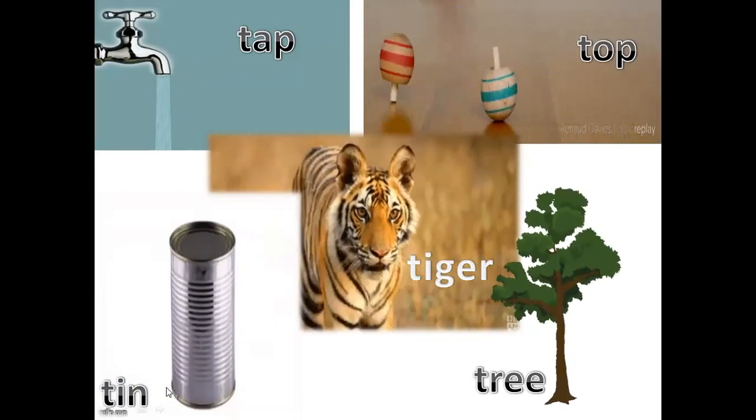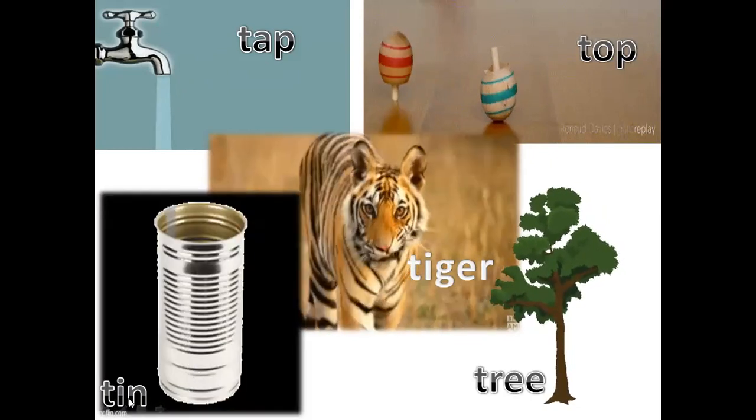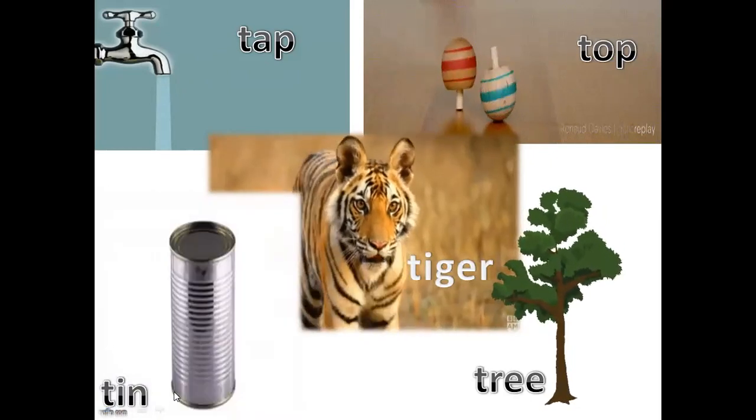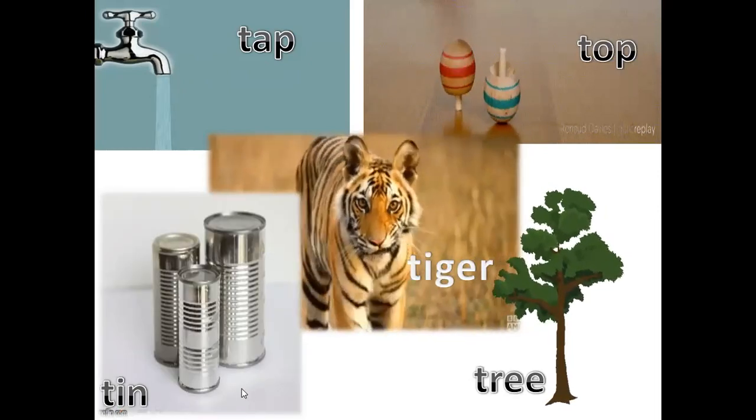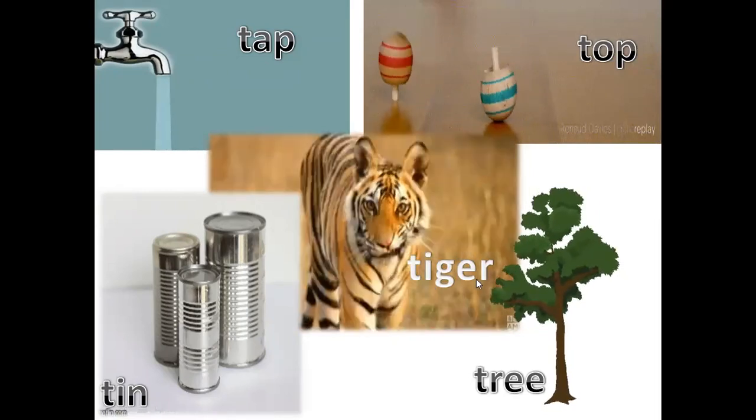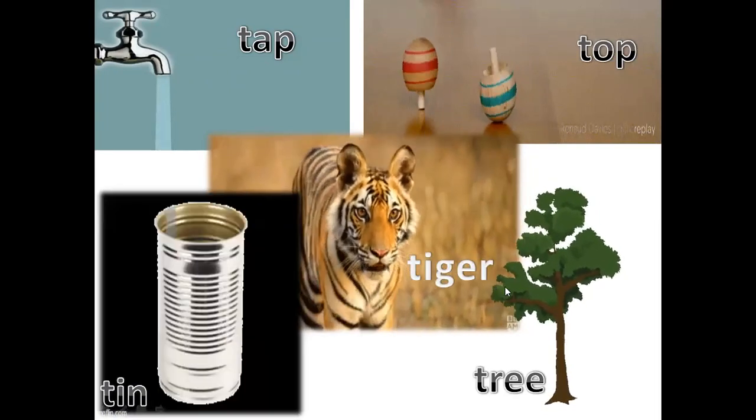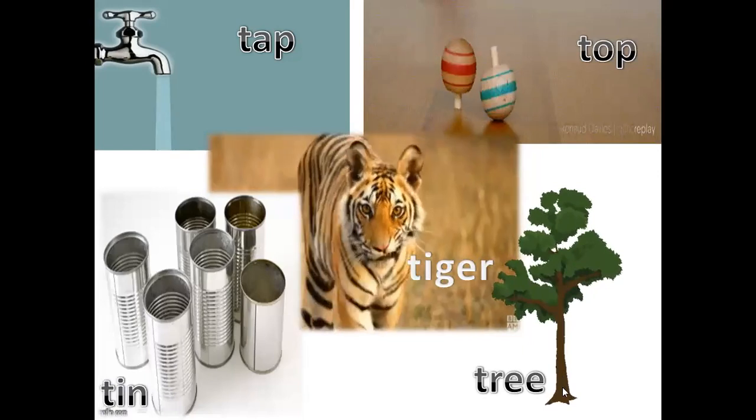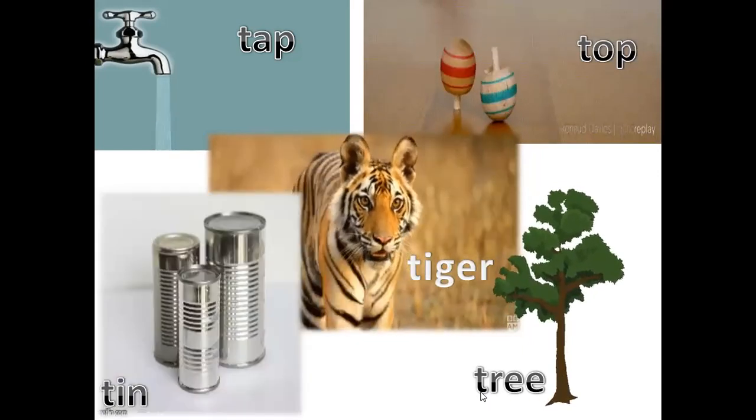What do you see here? Tins. T, T, tin. T is for tiger. T, tiger. T is for tree. T, tree.